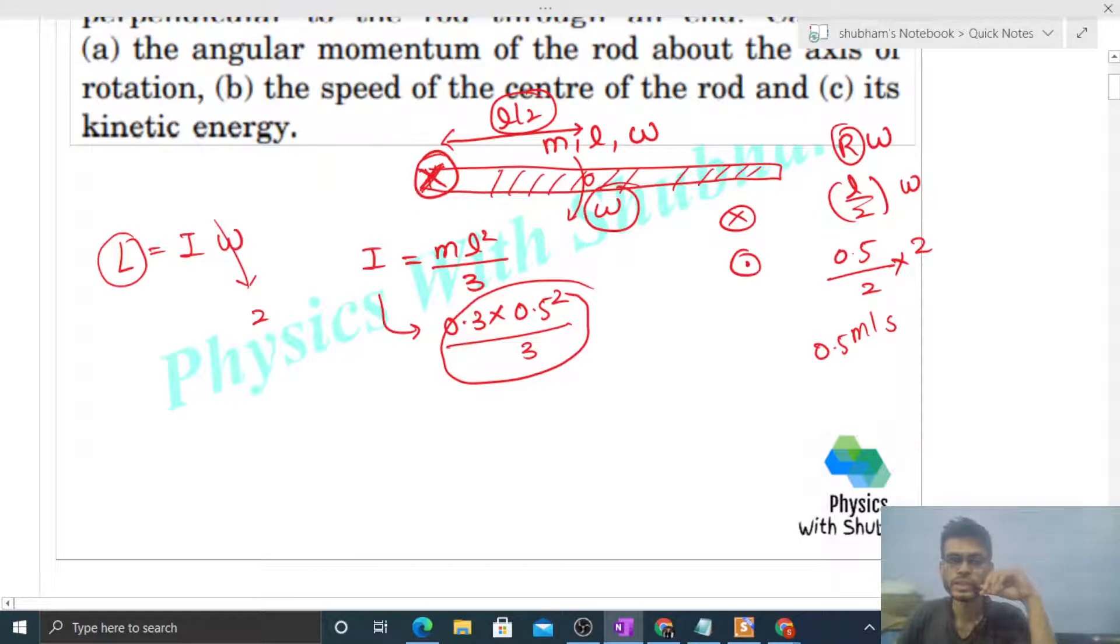One is that this axis, about which pure rotation is happening, is simply half of I into omega squared. I ka value aur omega ka value hamare paas pata hai, so this is the kinetic energy. Second, you can think of the motion this way: